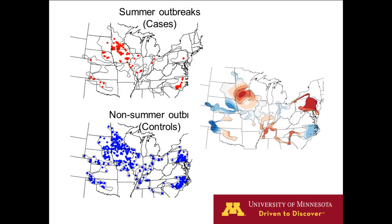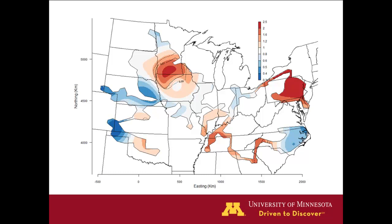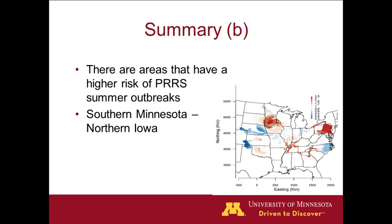Here this area comes up with a higher risk of summer outbreaks — red indicates higher risk and blue indicates lower risk. We have contour lines showing a significantly higher risk of summer outbreaks in this area. Another area also has a higher estimate but it's not significant. North Carolina shows up in blue — lower risk — but also not significant. For the geographical component, we identified areas with significantly higher risk of summer outbreaks located in southern Minnesota and northern Iowa.